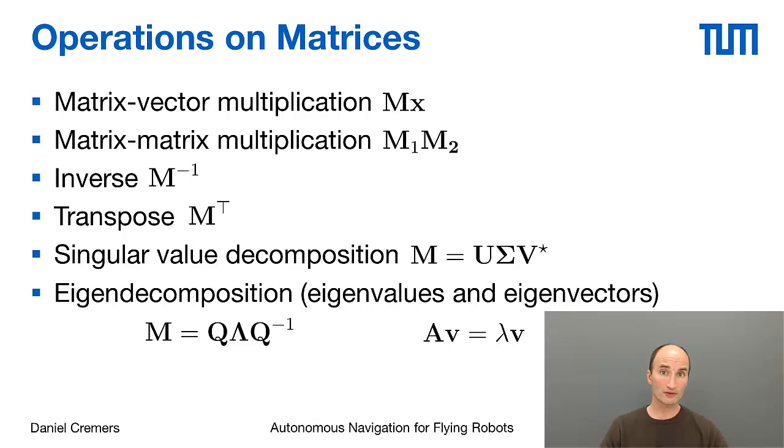Then we can define the inverse of a matrix M^-1. That assumes, first of all, that the matrix is a square matrix, and secondly, that the matrix is actually invertible. Invertible matrices can be identified by having a non-zero determinant and by having full rank. The transpose of a matrix, as I mentioned, is obtained by simply mirroring along the diagonal.